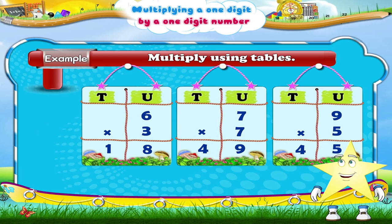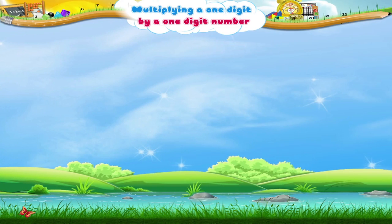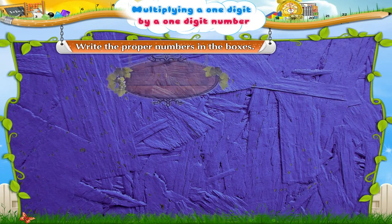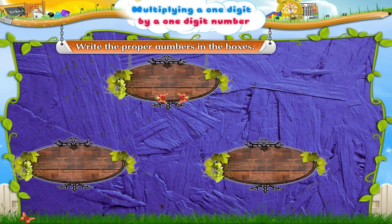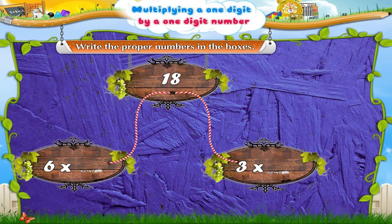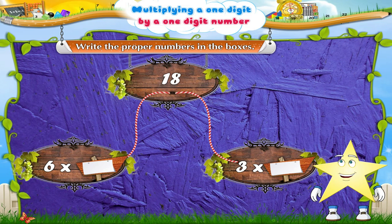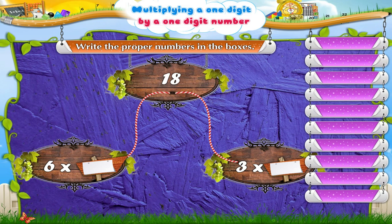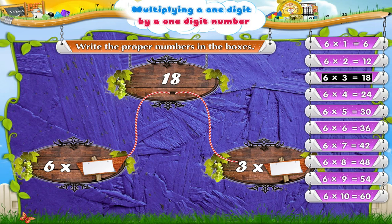Now that you have understood multiplication, let me show you something interesting. Look at this figure, you have to help me fill the correct numbers in the boxes. Let's begin. We have to get the number 18 as the product. We will first say the six times table till we reach 18. So six threes are 18. The number that goes into the first box is three.